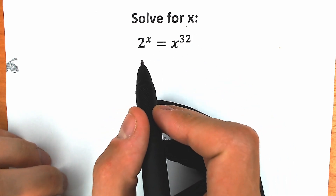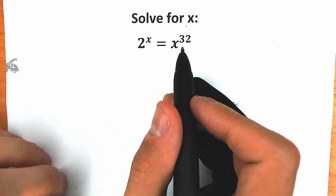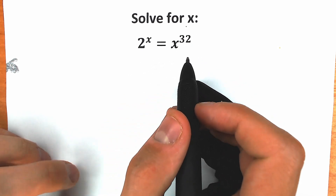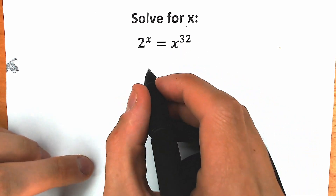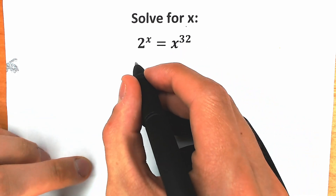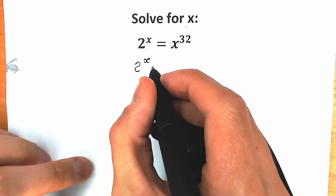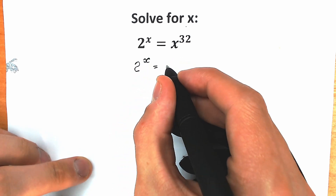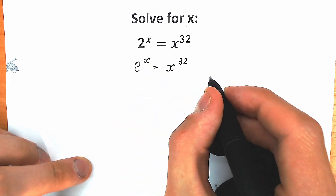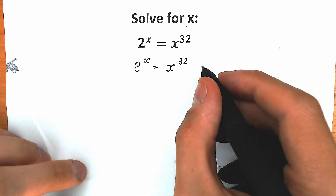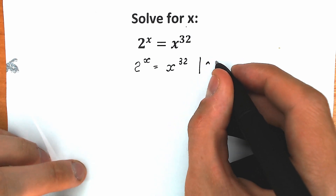First of all, let's try to group our constants on the left side and our variables on the right side. Let's rewrite our question: 2 to the power x equal to x to the power 32. First of all, let's raise both sides to the power 1 over x.